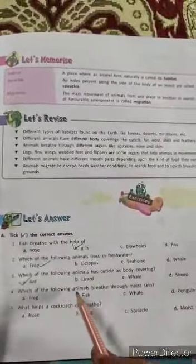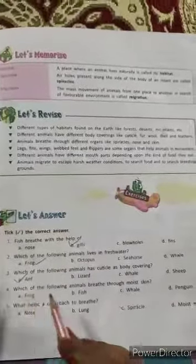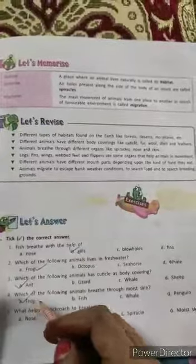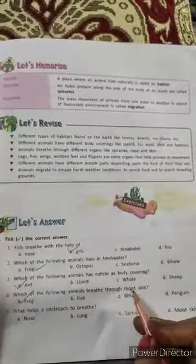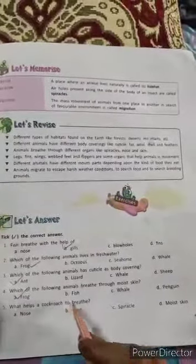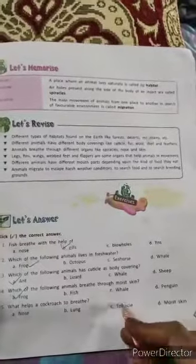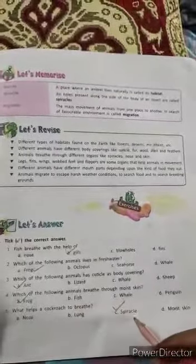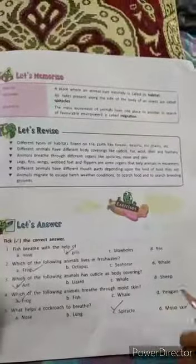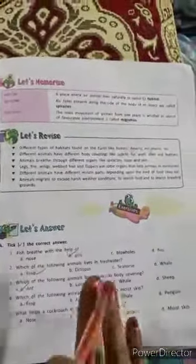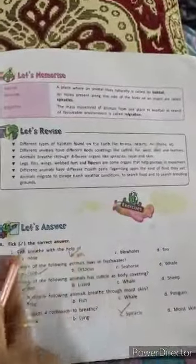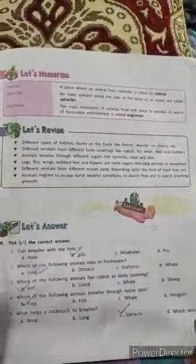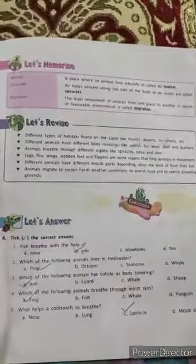Which of the following animals breathe through moist skin? The answer is frog — when on land it breathes with lungs, but in water it breathes through moist skin. What helps a cockroach to breathe? The answer is spiracle. Cockroach is an insect and all insects breathe with the help of spiracles present on the sides of their body. This exercise you have to complete in your copies and post in the class group. Thank you — if you have any queries regarding this chapter, you are free to ask.